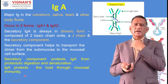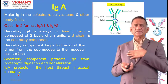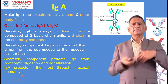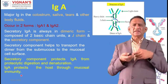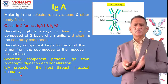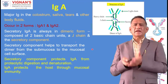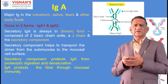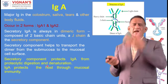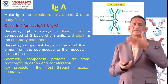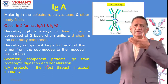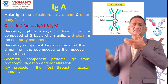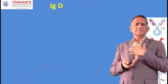IgA protects the host through mucosal immunity. We have a lot of bacteria and viruses in our gut, and the lungs are the ventilation system - through the lungs we get fresh air but also infections. That is why for COVID-19, people are advised to maintain social distancing and wear masks to avoid inhaling coughs and sneezes from others.